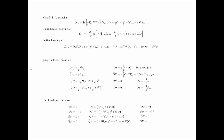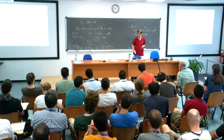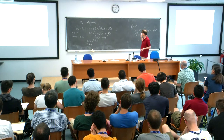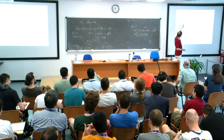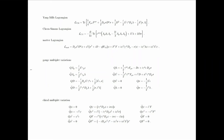Tomorrow I will tell you how to localize. Briefly: the matter Lagrangian and the Yang-Mills Lagrangian are Q-exact, so they will go away. You will get a classical piece from the Chern-Simons, and then a one-loop determinant to compute. I will discuss the one-loop determinant tomorrow morning as the first thing.